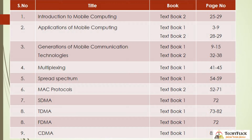Fourth topic: Multiplexing — Textbook 1, page numbers 41 to 45. Fifth topic: Spread Spectrum — Textbook 1, pages 54 to 59. Sixth topic: MAC Protocols, which stands for Medium Access Control Protocols — Textbook 1, Chapter 3. The protocols covered include SDMA, FDMA, TDMA, and CDMA, pages 52 to 89. You can also compare these protocols — for example, compare SDMA vs TDMA, or compare all four protocols together.